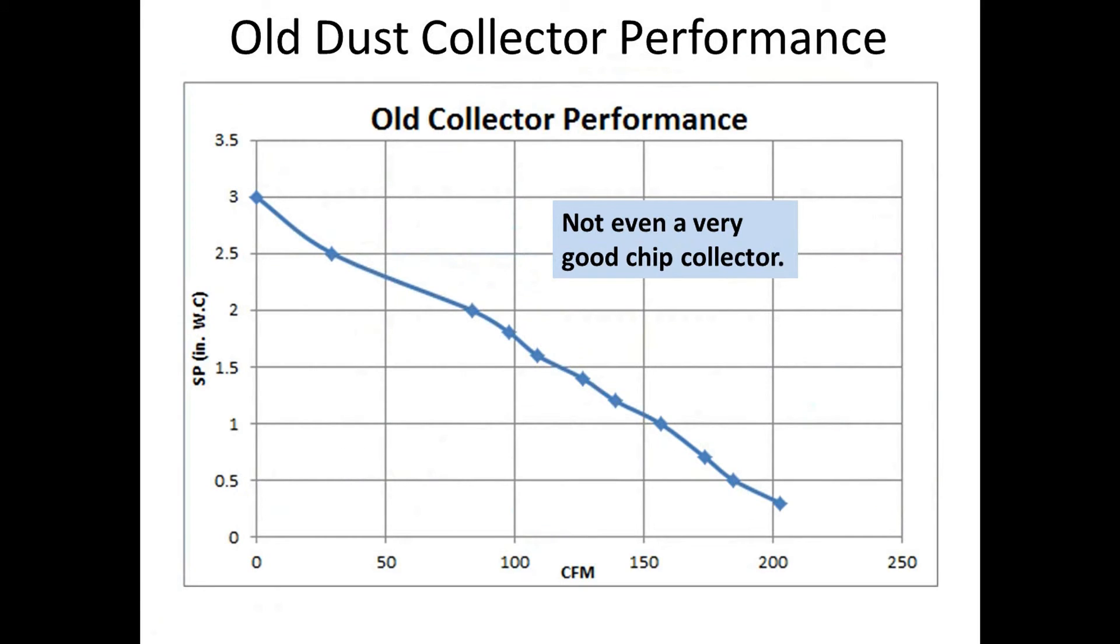Now let's look back at the old dust collector that I had. I actually went through and measured the CFM versus static pressure. Wow, what a performing unit it is. The most I can get is three inches of static pressure out of it and the most I can get is around 200 CFM. But in reality, I'm somewhere in between. It's just not very good. It's not even a very good chip collector based on Bill Pentz's chart that I showed earlier. So it's actually pretty pathetic.